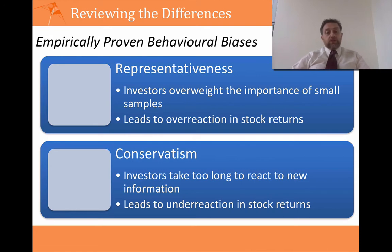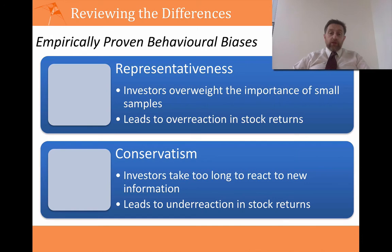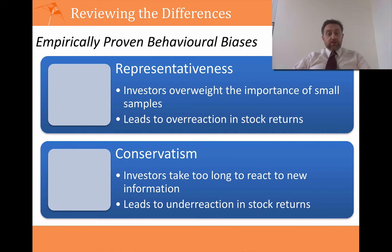Then you have conservatism, which is the opposite of representativeness. It says that investors actually take too long to react to new information — new information might come in but it takes a long period for it to be fully impounded into prices, leading to underreaction in stock returns. There is a very large body of research showing evidence of representativeness, and at the same time a very large body showing evidence of conservatism. In practice you see conservatism in banking stocks, so even within different industries you're getting contradictory results.